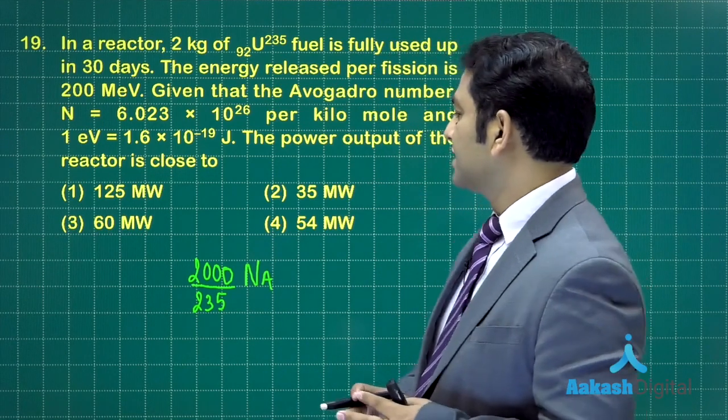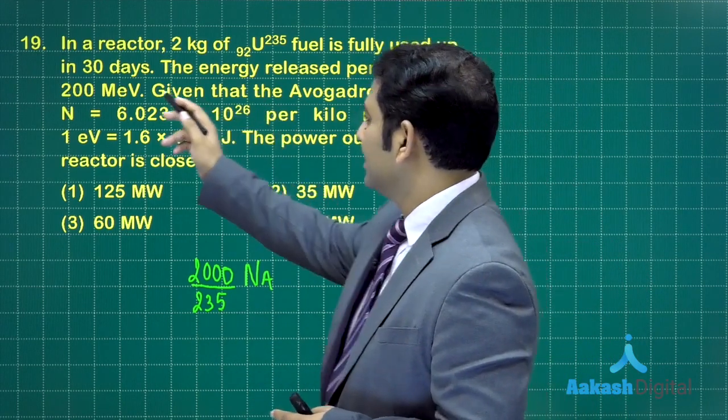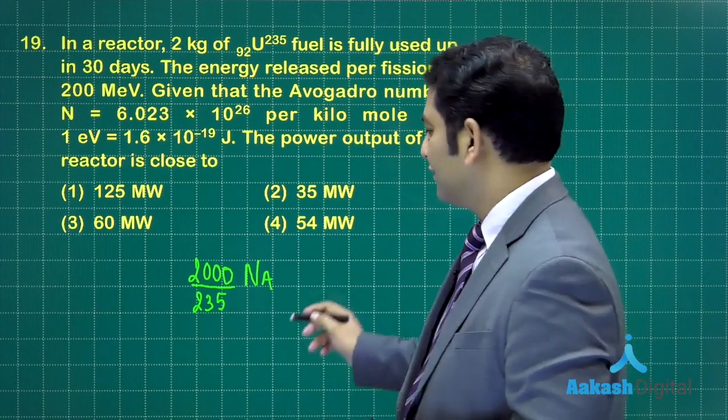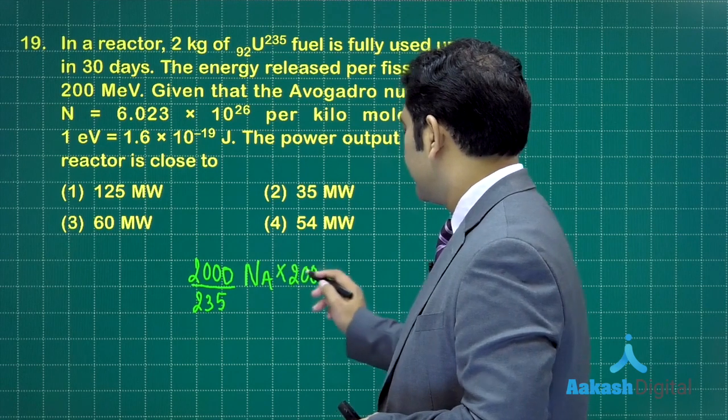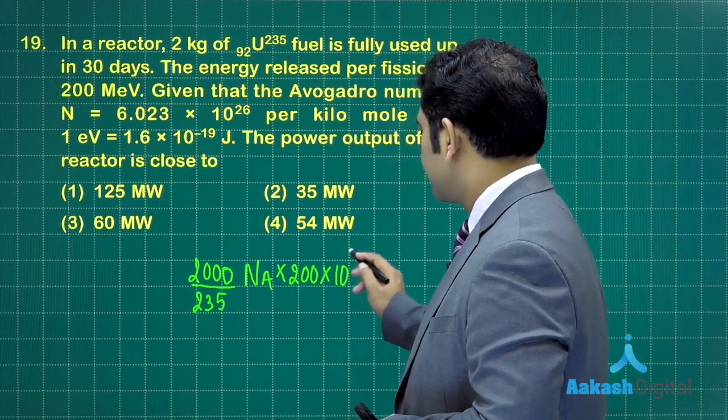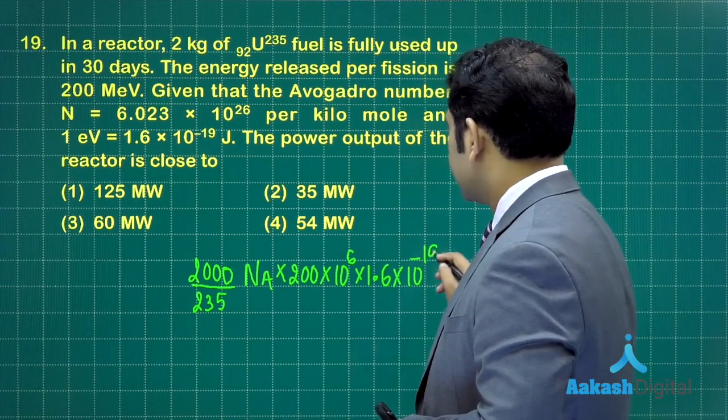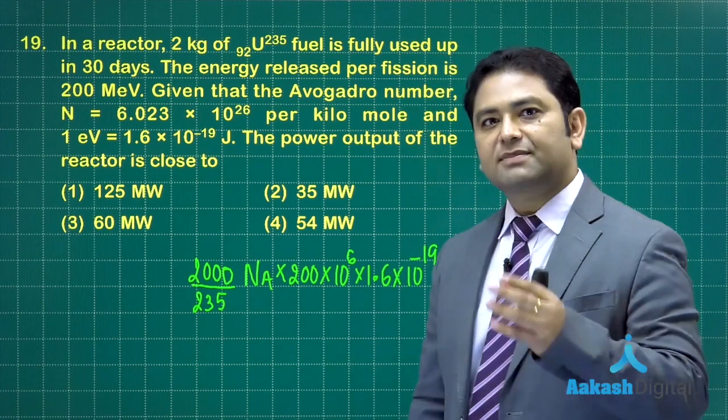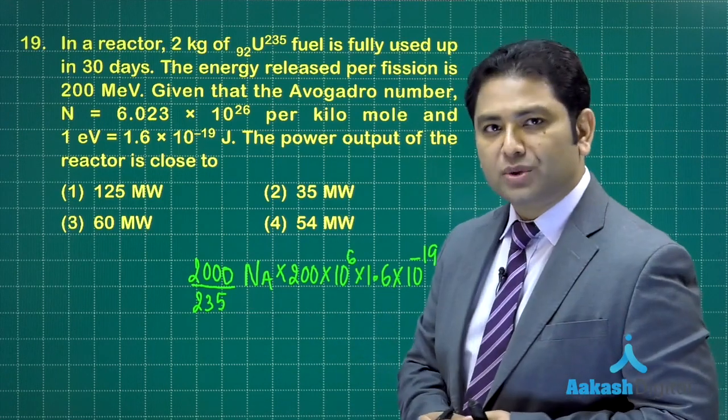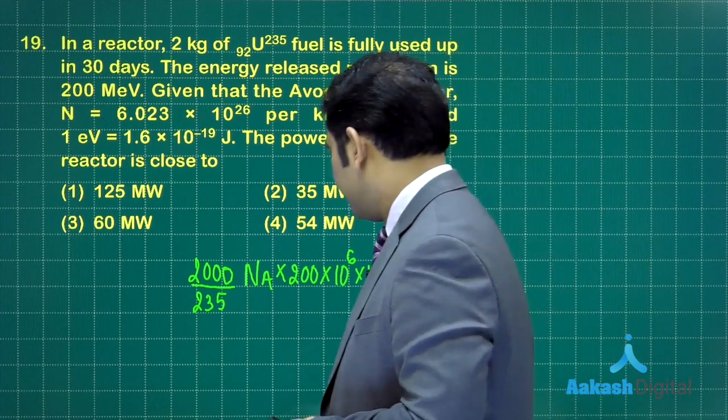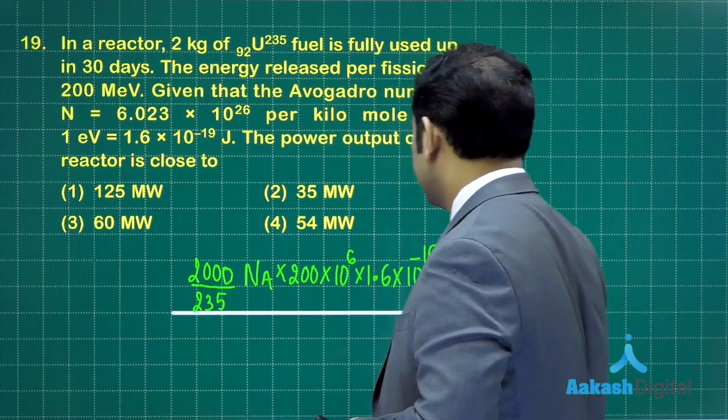With this number of atoms, one atom is associated with 200 mega electron volts. So multiply by 200 times mega (10 raised to the power 6) times 1.6 times 10 raised to the power minus 19. This much joule of energy is associated with 2 kg.